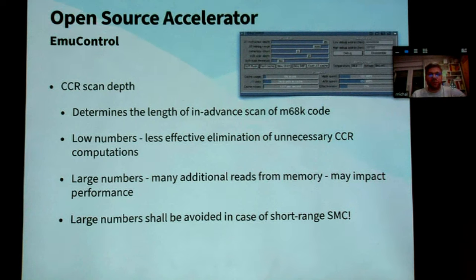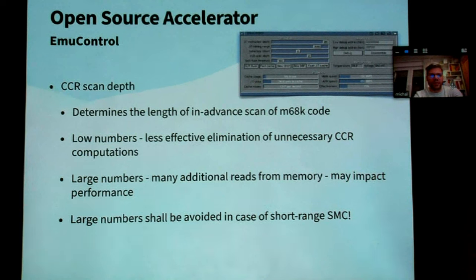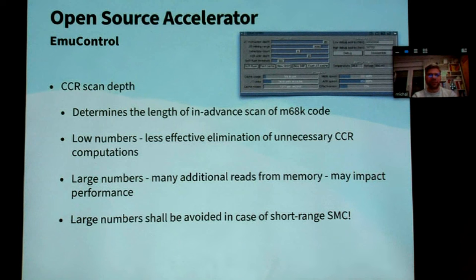Low CCR scan depth numbers result in less effective elimination of computations. Large numbers mean a lot of code has to be read from memory in advance — for every single piece of translated code you might have to read 200 to 300 bytes in advance, which can impact performance. Large numbers for this scan depth should also be avoided in the case of self-modifying code, especially when one instruction modifies the very next instruction — as in state-of-the-art demos — so this number has to be set as low as possible.